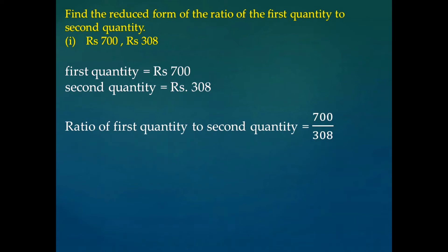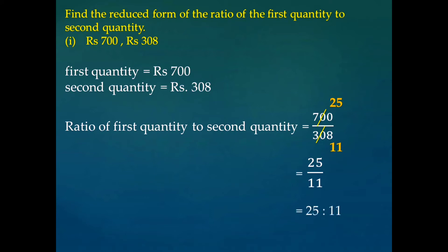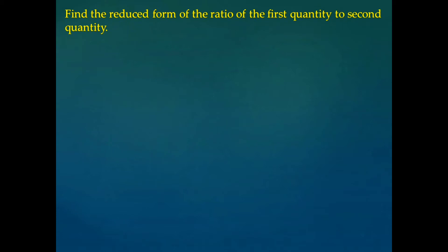The ratio of the first quantity to the second is 700 divided by 308. If we simplify these two, we will get 25 divided by 11, which is the reduced form. That is, we can also write it as 25 is to 11.